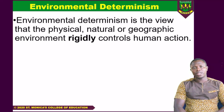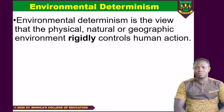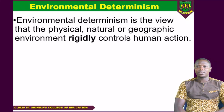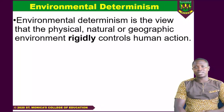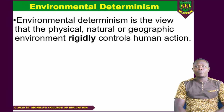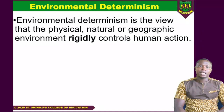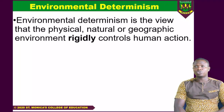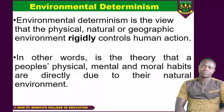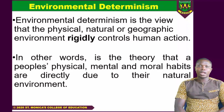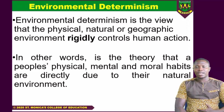Our first theory that we will look at is environmental determinism. What is it at all? Generally, people think that the environment has significant impact on you as a person, on me as a person. Environmental determinism is of the view that the physical, natural, or geographic environment rigidly controls human action — it is the theory that people's physical, mental, and moral habits are directly due to their natural environment.